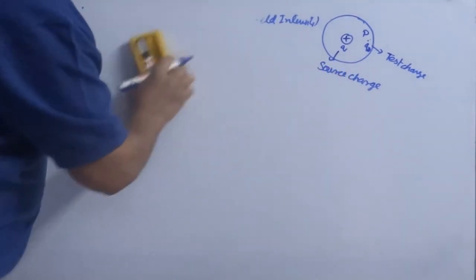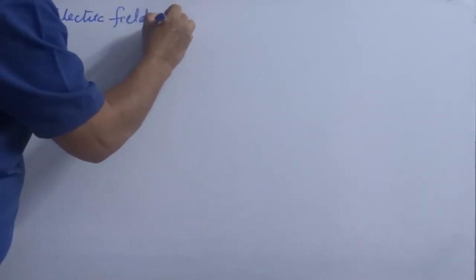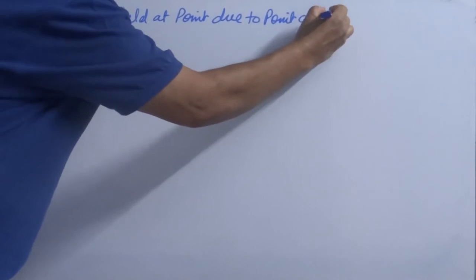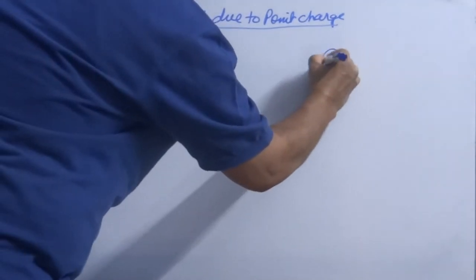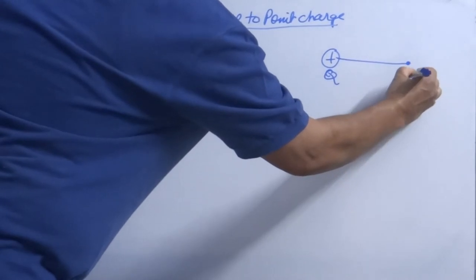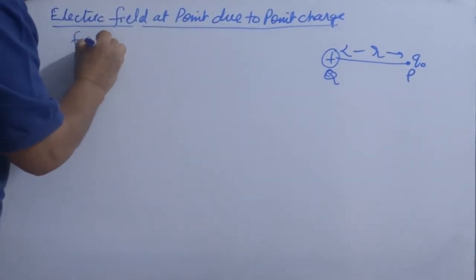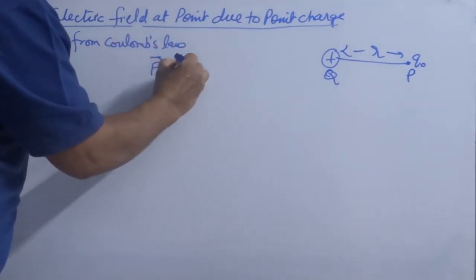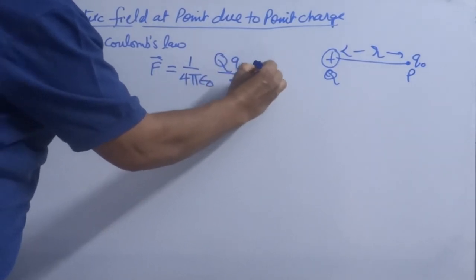Now let's find the electric field at a point due to a point charge. Consider a source charge q and point P at distance r from the source charge. Place a test charge q₀ at P. From Coulomb's law, the force acting between these two charges is F = (1/4πε₀) · (q·q₀/r²) · r̂.